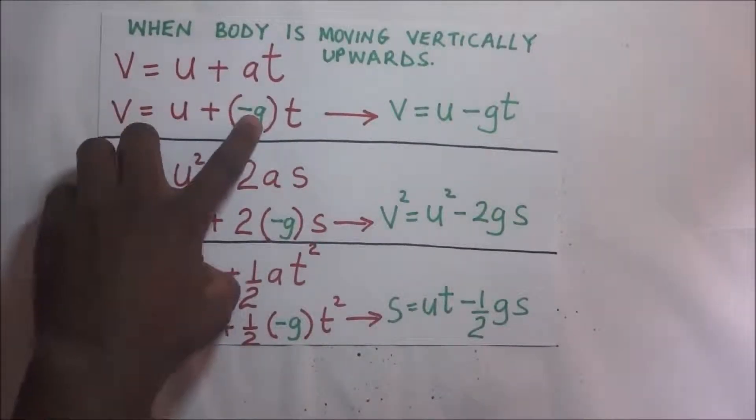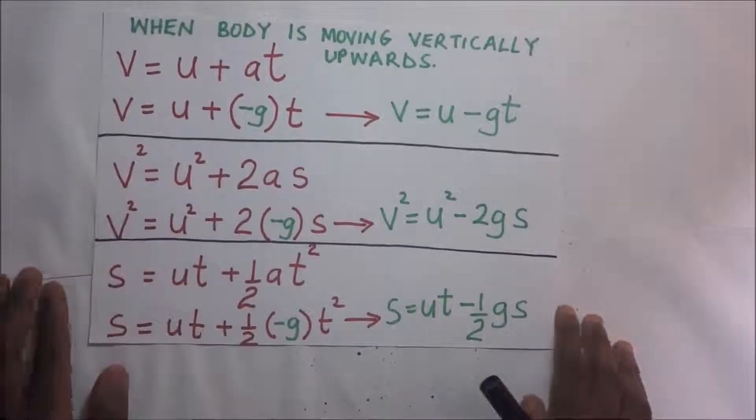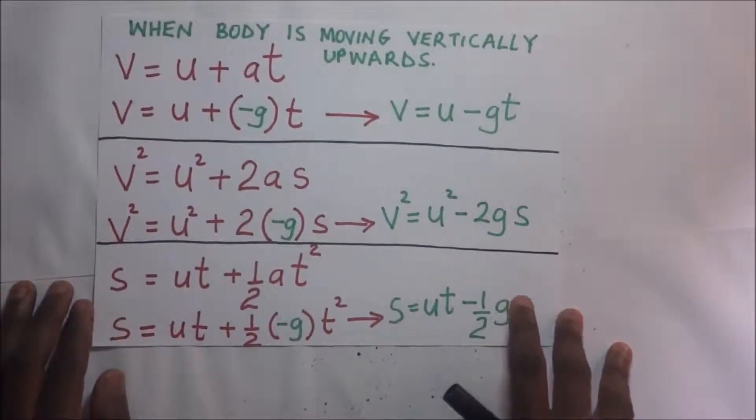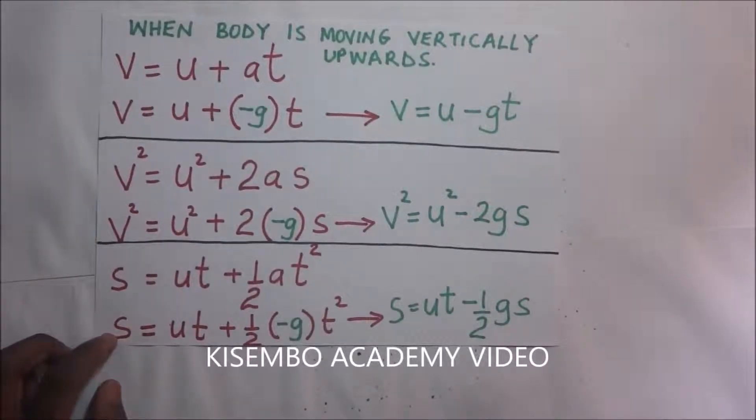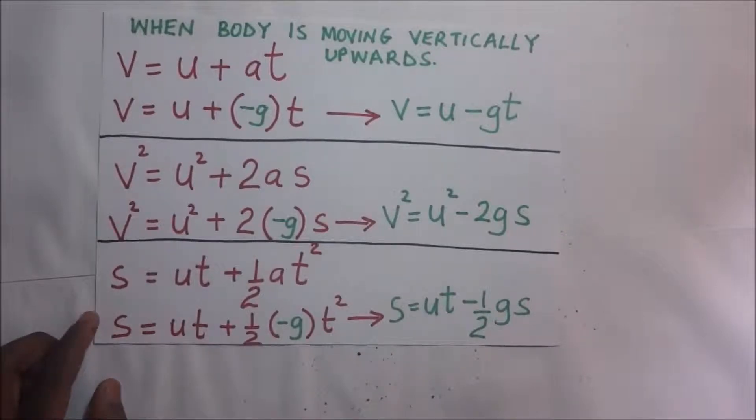Where does this negative come from? We all know that because we are on the earth we are attracted. There is a force that pulls us towards the earth which we call the gravitational force. This gravitational force acts towards the center of the earth.